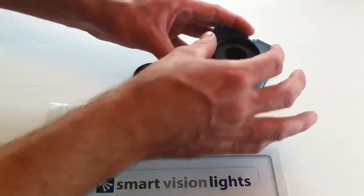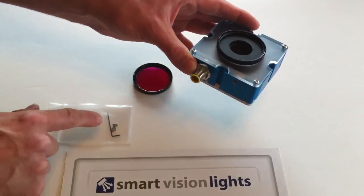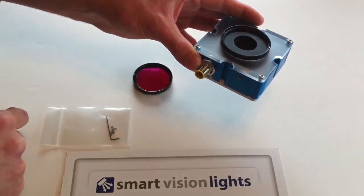To do a front mount technique, simply drop that adapter right into the front, tighten it down with set screws provided in the kit.